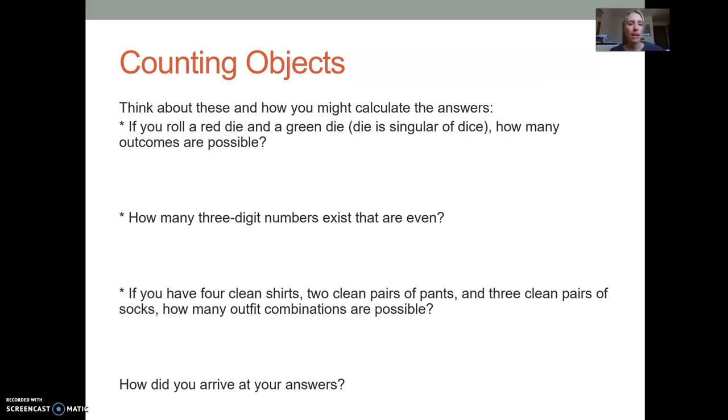Okay, hopefully you've had some time to think about these. So the first one, if you roll a red die and then a green die, how many outcomes are possible? So if we think about this, the red die, there's six possibilities, right? You can roll a one, you can roll a two, three, four, five, or six, and then a green die has the same number of outcomes.